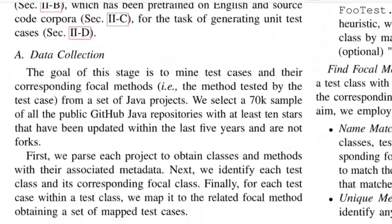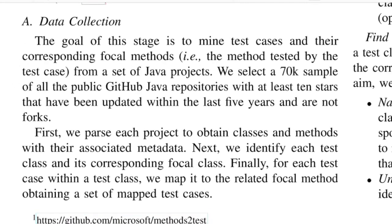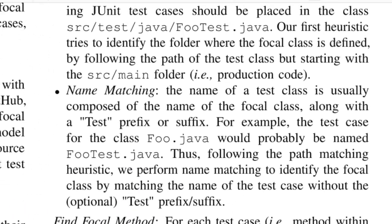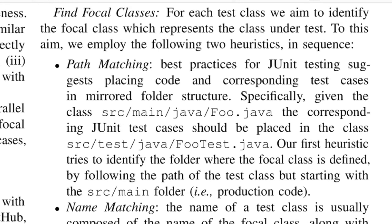The authors discuss data collection for Methods2Test. They select 70,000 public GitHub repositories in Java that have at least 10 stars, have been updated in the last five years, and are original repositories. Once they have these 70,000 samples, they apply heuristics based on best practices for how people define test cases in JUnit — one of the tools for writing unit test cases in Java — such as requiring a particular folder structure.